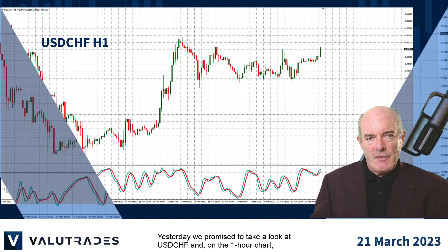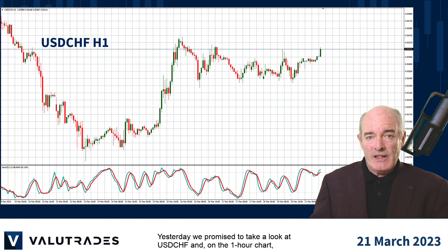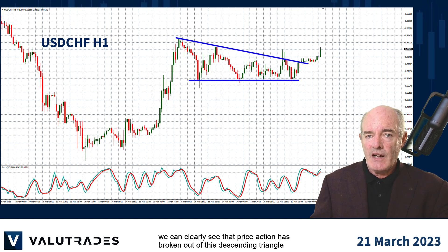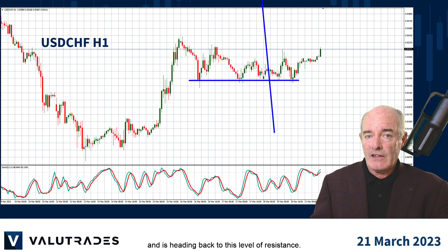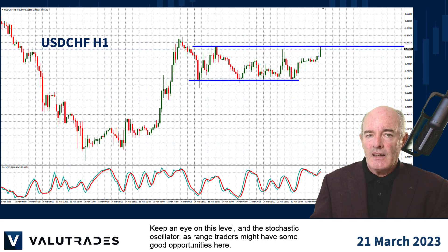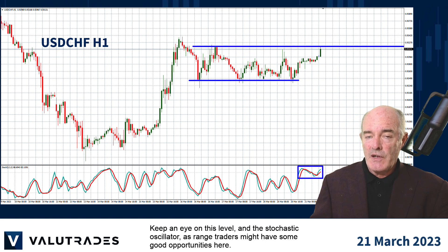Yesterday we promised to take a look at Dollar Swiss and on the 1-hour chart we can clearly see that price action has broken out of this descending triangle and is heading back to this level of resistance. Keep an eye on this level and the stochastic oscillator as range traders might have some good opportunities here.